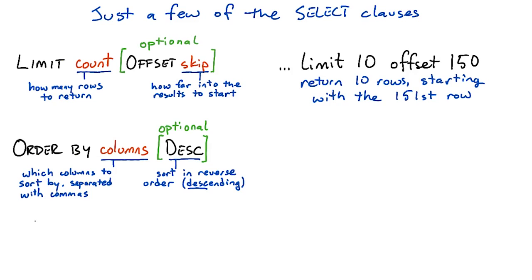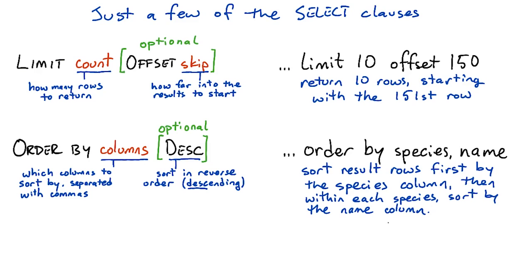Another clause is order by. Order by lets you say how you'd like your results to be sorted. That'll usually be by one or more columns. If you want them sorted from the largest to the smallest, that is in descending order, then you add desc to the end for descending. So if you wanted to do a query against the animals table sorted first by species, and then within each species by name, you'd say order by species comma name.